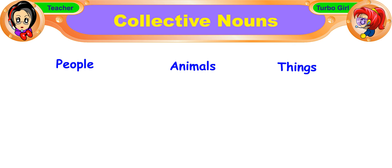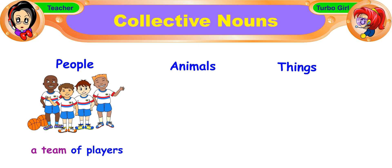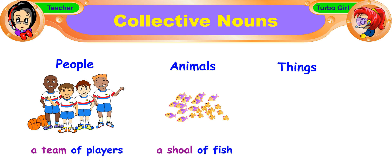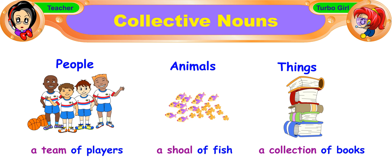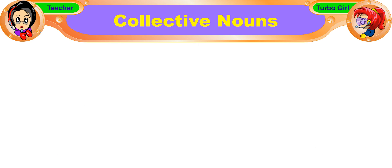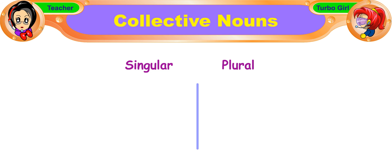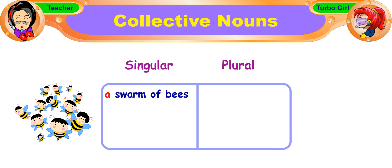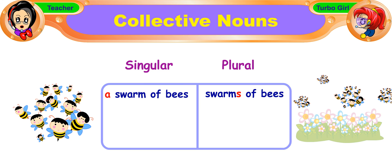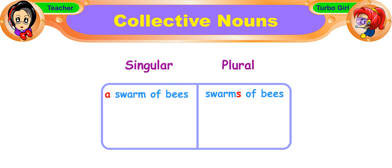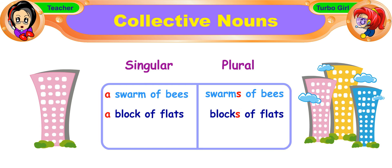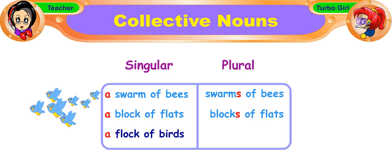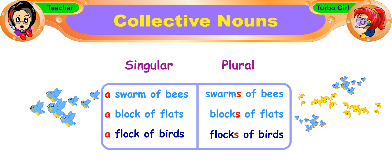For example, a team of players, a shoal of fish or a collection of books. Collective nouns can be in the singular form or the plural form. For example — singular: a swarm of bees; plural: swarms of bees. A block of flats; blocks of flats. A flock of birds; flocks of birds.